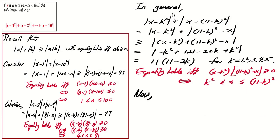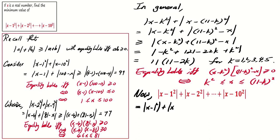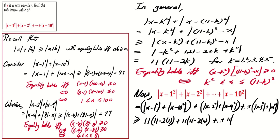Now let's look at the full expression: the summation of |x - k²| for k equals 1 to 10. We do the pairing: |x - 1²| with |x - 10²|, then |x - 2²| with |x - 9²|, and so on, until |x - 5²| plus |x - 6²|. Using the above result, this expression is at least 11(11-2·1) + 11(11-2·2) + ... + 11(11-2·5).